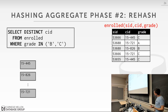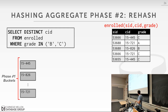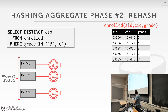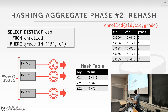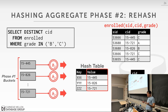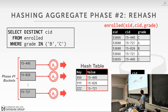In phase two, we take the partitions generated from phase one and for each partition bring it back into memory to build an in-memory hash table using a second hash function. Since we're doing DISTINCT, we just maintain the values inside the hash table. As we scan along, if we see a duplicate, we discard it. The final result we produce for the query is just the values stored in the hash table. We're essentially doing a linear scan inside the value list for each key.